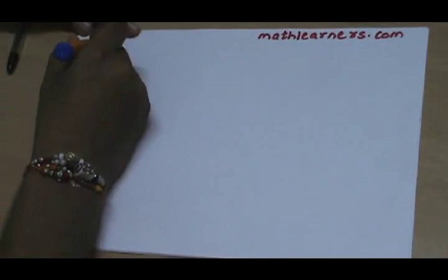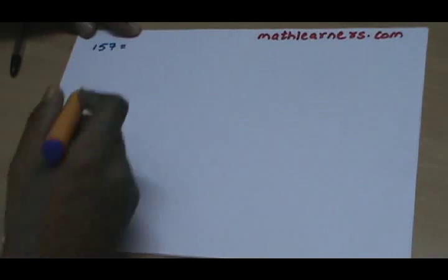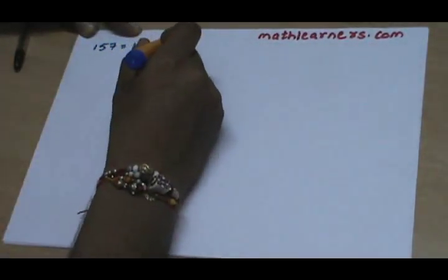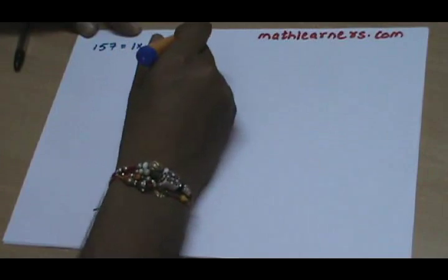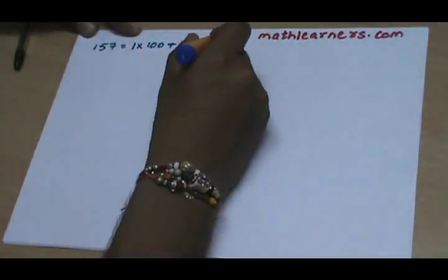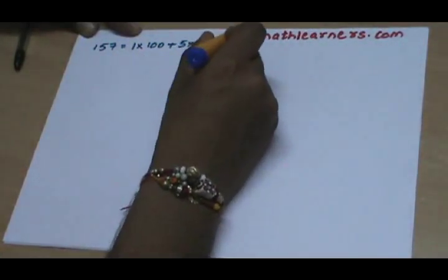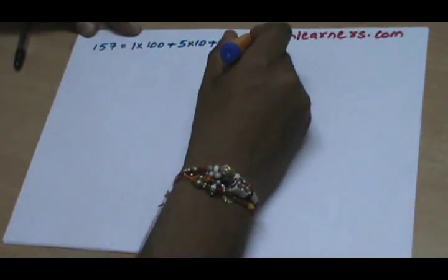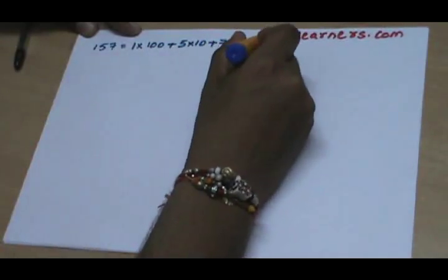Suppose we have the number 157. In the place value system, this number can be written as 1 multiplied by 100, plus 5 multiplied by 10, plus 7. If we solve this, we obviously get 157.